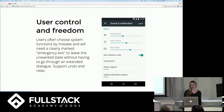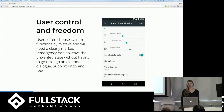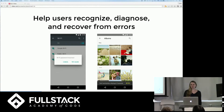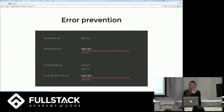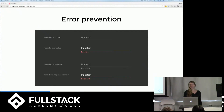Another one is user control and freedom. Users should always know how to exit every state — clearly mark your exits and support undo and redo. Also, help users recognize, diagnose, and recover from errors. If there is an error, state what caused it in plain human language, not using error codes. Even better, help the user not have the error in the first place.